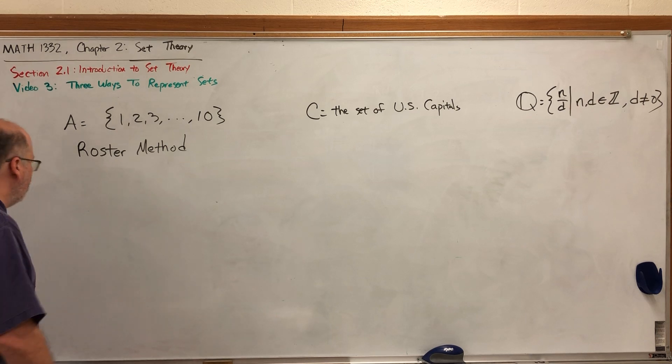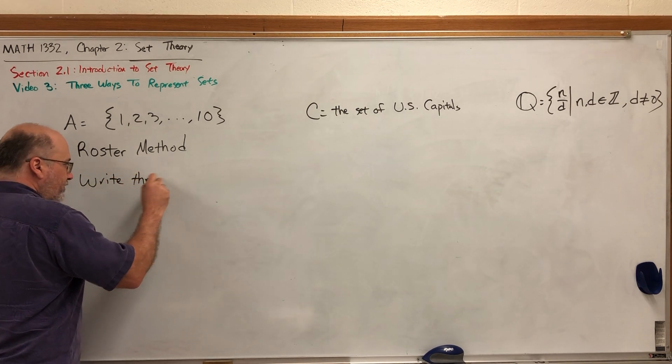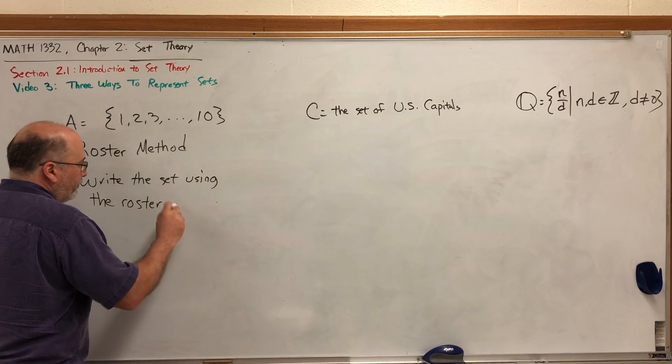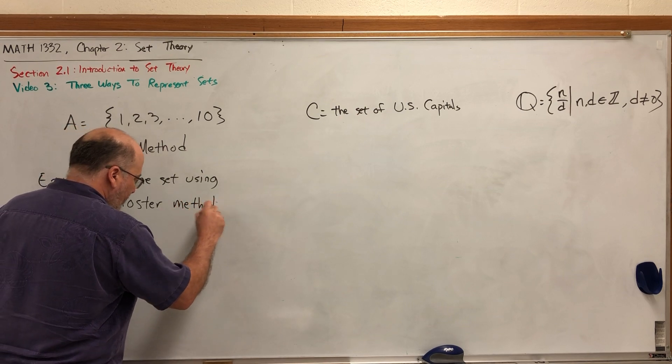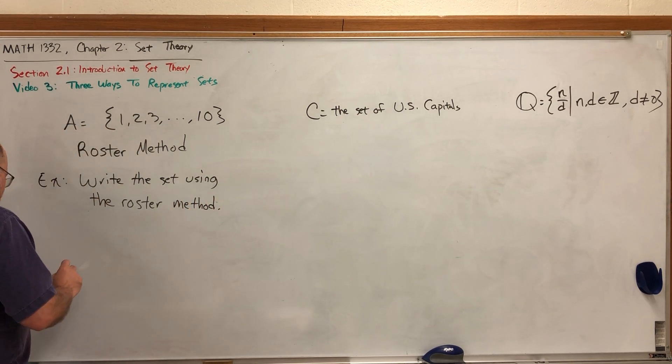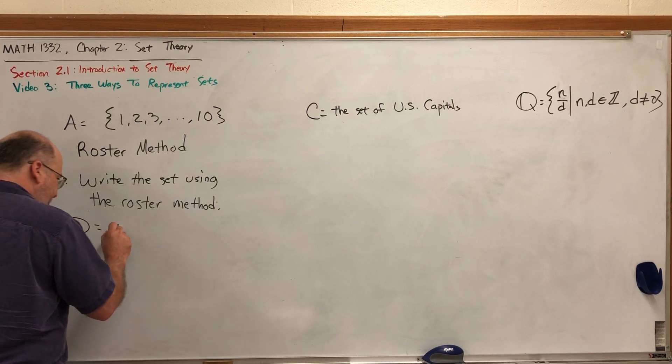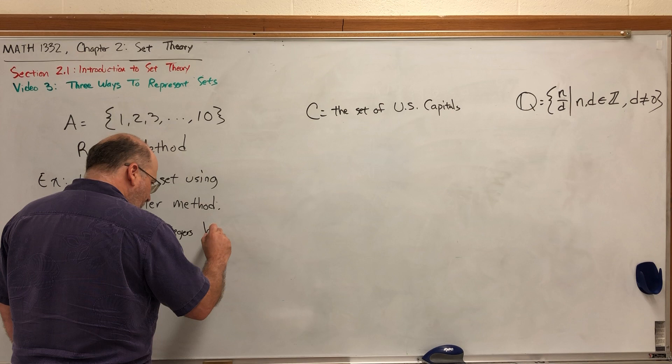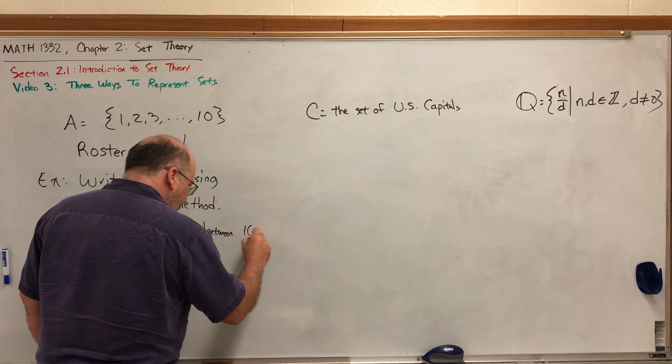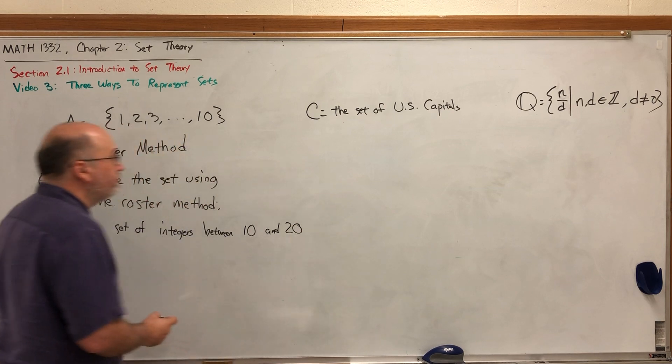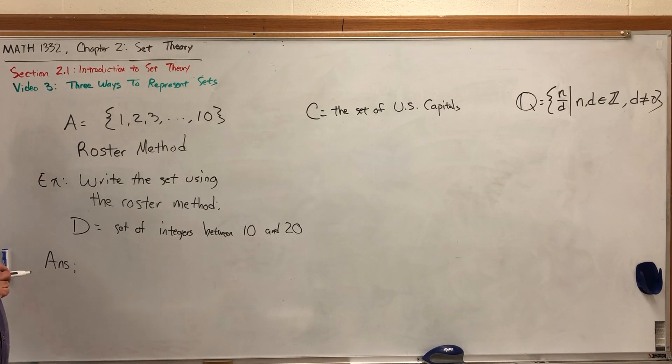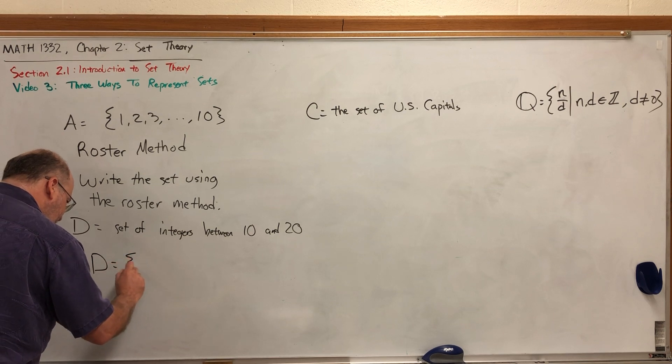The roster method for representing a set simply says list its elements like we did here. Sometimes you use ellipses. For example, let's say I ask you to write the set using roster method, using the roster form, and the set is going to be the set called D, the set of integers between 10 and 20. Now notice that this set is not written in roster form or using the roster method because I did not list its elements, but we could fix that.